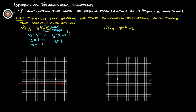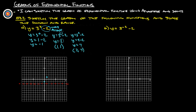That gives us the point (1, 1) — we plugged in one and out came one. Let's also try x equals two because that will probably be a little bit nicer. y equals three squared minus two, so that's nine minus two, which is y equals seven. So now we have the point (2, 7).